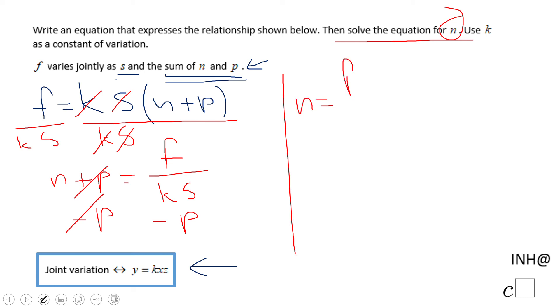And our final answer will be N equals F over K S minus P. Another way to do this problem is by using the distributive property in this moment and then go from there.